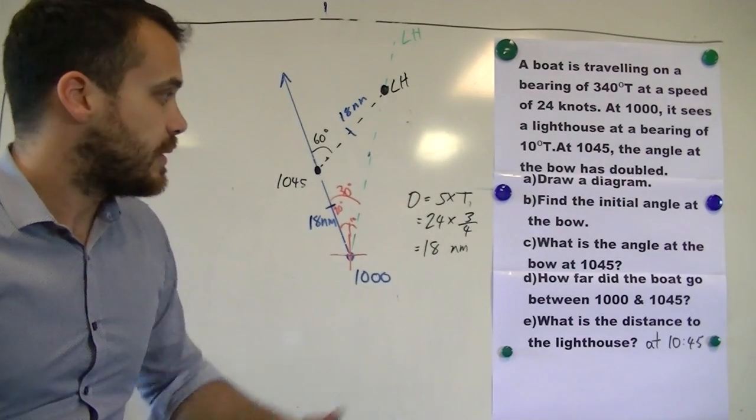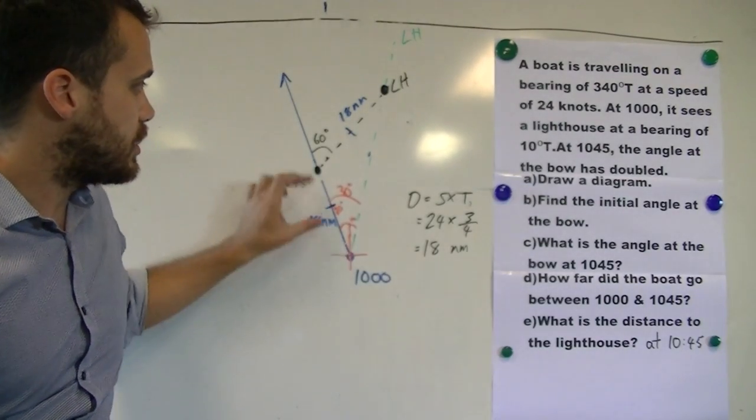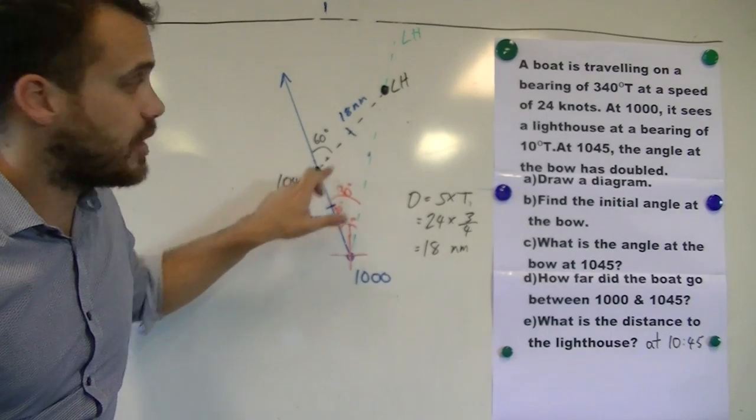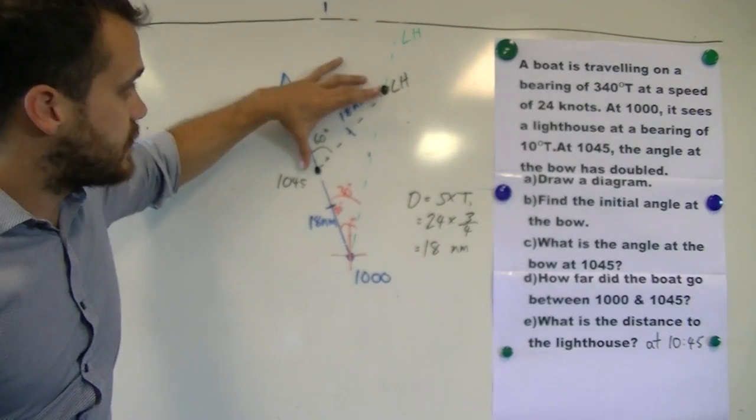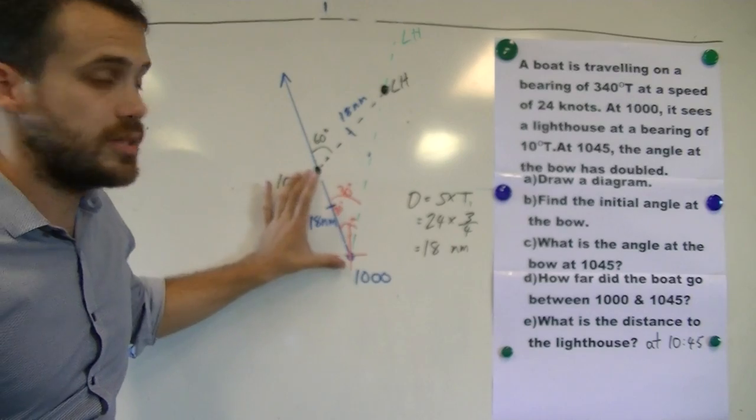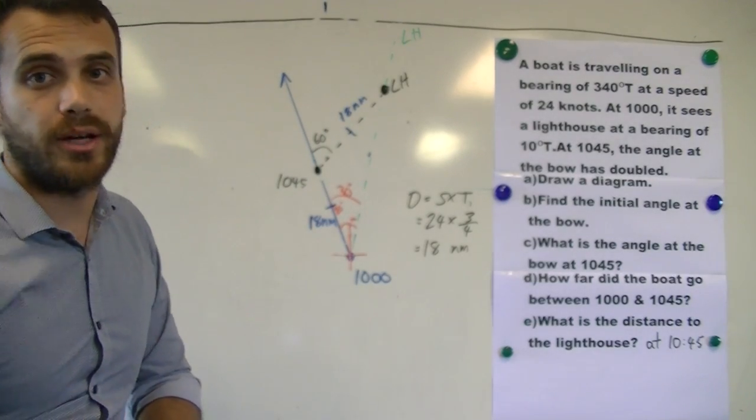So there we have it. If we travel along here, the distance between us at 10:45 and the lighthouse will be 18 nautical miles, the same as the distance that we travelled in the beginning. That's doubling at the bow.